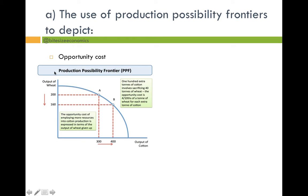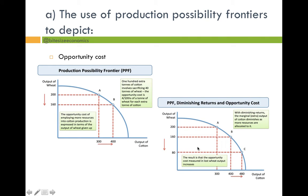Looking at opportunity cost and the production possibility frontier: the opportunity cost of employing more resources into cotton production is expressed in terms of output of wheat given up. For example, if you decide to produce at point A you could be producing 200 units of wheat and 300 units of cotton. But say you want to produce more cotton and move to point B, producing 400 units of cotton — the opportunity cost is 40 units of wheat. Similarly at point C you're producing even less wheat: 80 units less wheat and 80 units more cotton, illustrating diminishing returns.